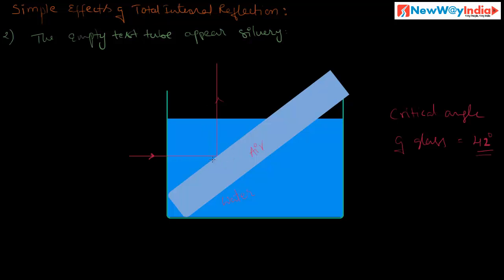The ray strikes the glass-air surface at the inner surface of the tube, and the reflected ray reaches the eye. If you observe from the top of the water surface — here is the eye — the ray reaches your eye. Observe another ray — this ray strikes the surface of glass and air, and the incident angle is more than the critical angle, so it gets total internal reflection, and the reflected ray reaches the eye.